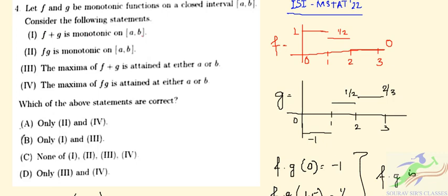Statement 1 — that f + g is monotonic on the closed interval [a, b] — is not monotonic. Statement 3 — that the maximum of f + g is attained at either a or b — is also false, since the maximum is not attained at either a or b. So all four statements 1, 2, 3, 4 are false. The correct option is option C: none of 1, 2, 3, 4.